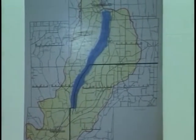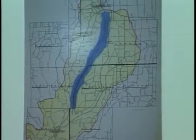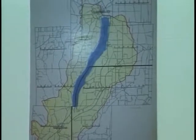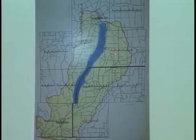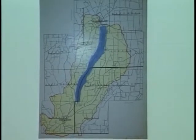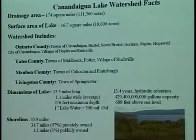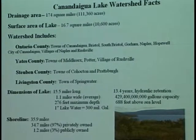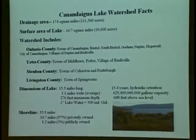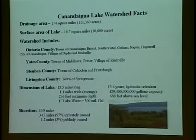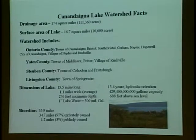Canandaigua Lake has a 174 square mile watershed that drains into it, encompassing a number of municipalities in two counties. This is the area that's my jurisdiction as the Canandaigua Lake watershed inspector. Some facts: drainage area is 174 square miles, surface area of the lake is 16.7 square miles. The watershed includes parts of Ontario County, Yates County, Steuben County, and a small sliver of Livingston County.